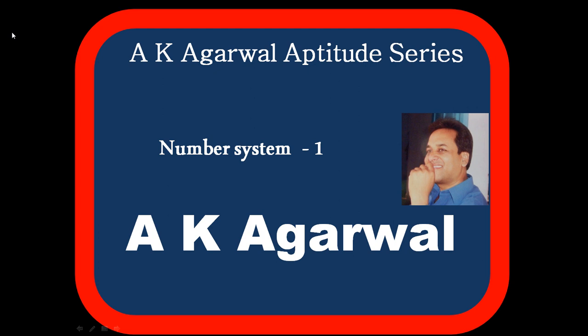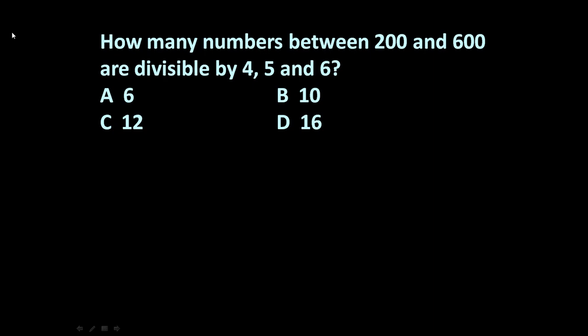Here the given problem is: How many numbers between 200 and 600 are divisible by 4, 5, and 6? Four options are given. We have to find the numbers between 200 and 600 which are divisible by 4, 5, and 6 completely.